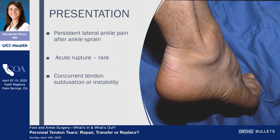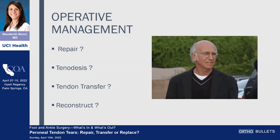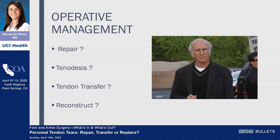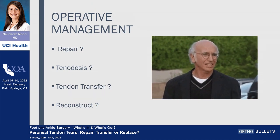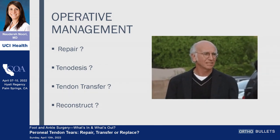Perineal tendon tears most commonly present as persistent lateral ankle pain after an ankle sprain. Key ruptures are fairly rare, most commonly seen chronically, and you want to look for concurrent tendon subluxation or instability, including ankle instability as well as heel varus alignment. Non-operative management mainstays are bracing and physical therapy. Operative management is where it gets pretty confusing — do we repair, do tenodesis, do transfer, do reconstruction? The literature overall is pretty limited, vague, and inconclusive.